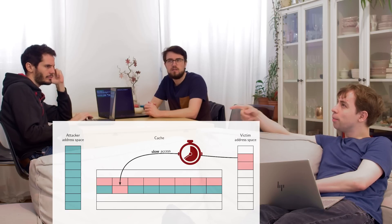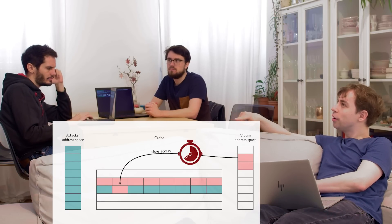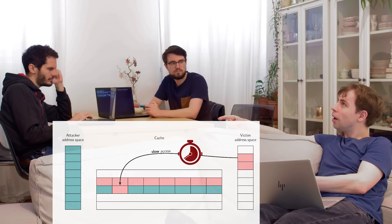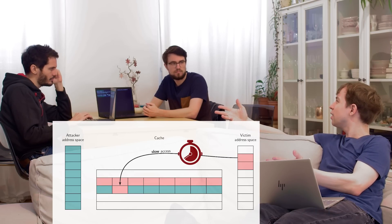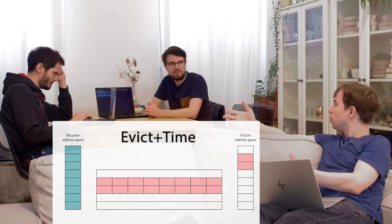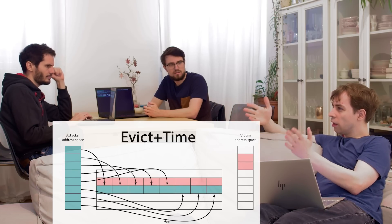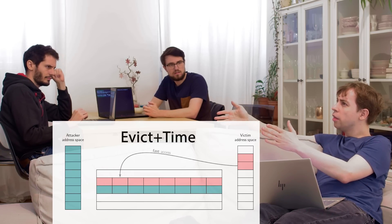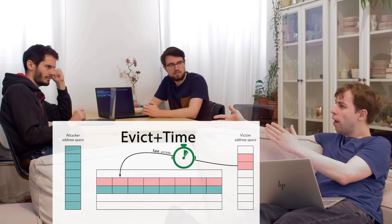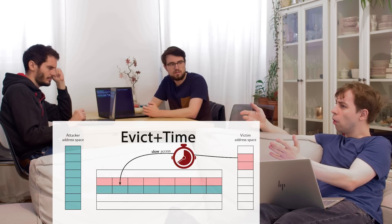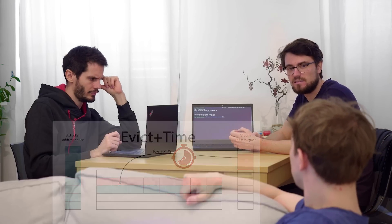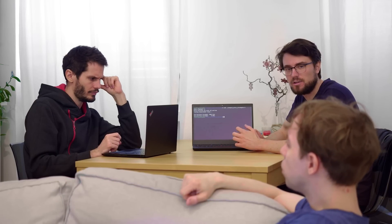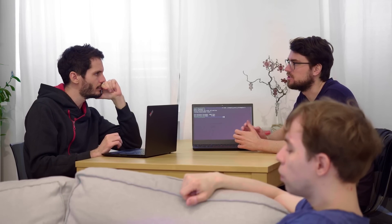You could measure that. You could time the victim. That's called an evict-and-time attack — you evict the cache set and then check whether the victim runs fast or slow. But in our case, we do not time the victim. So how could we extract information?